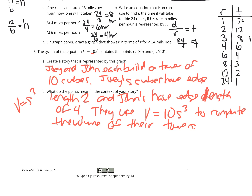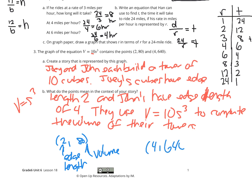Now, what do the points mean in the context of this equation? Well, (2, 80) — the 2 was the edge length and 80 would be the volume. Same thing with (4, 640) — the 4 was the edge length of the cube and 640 would be the volume.